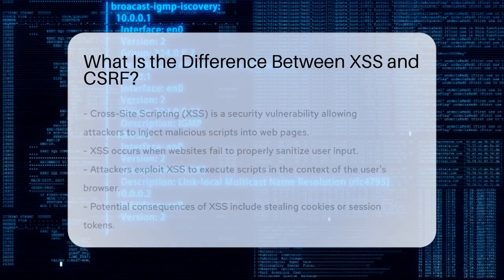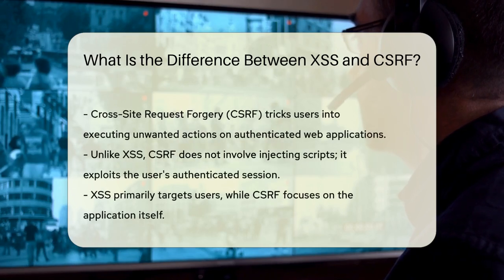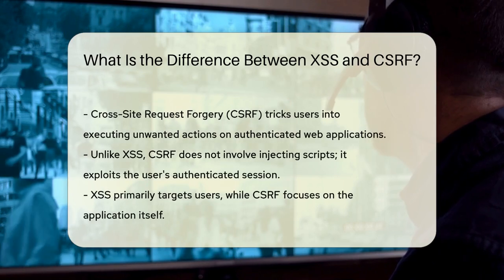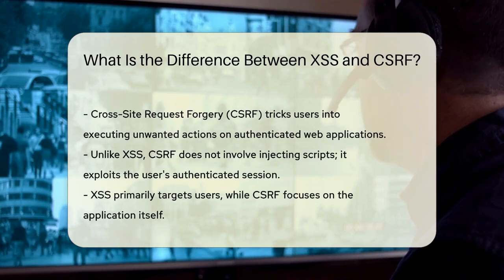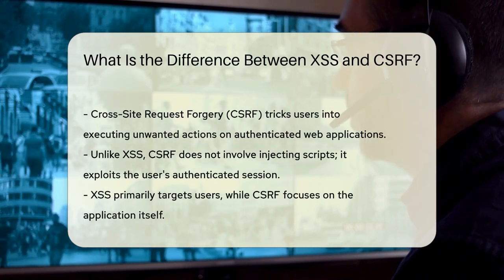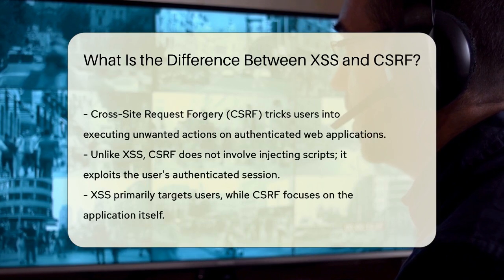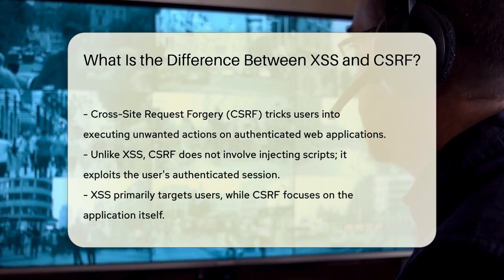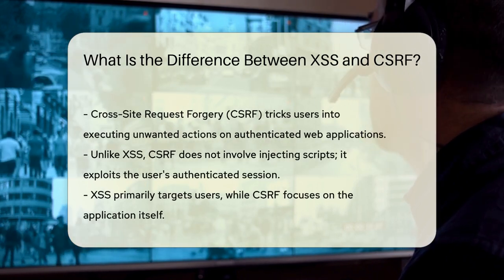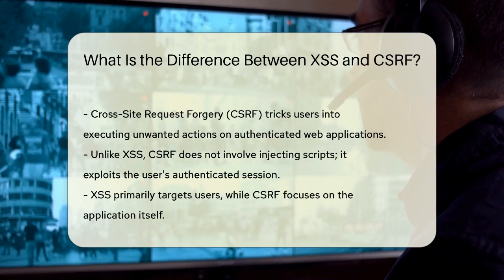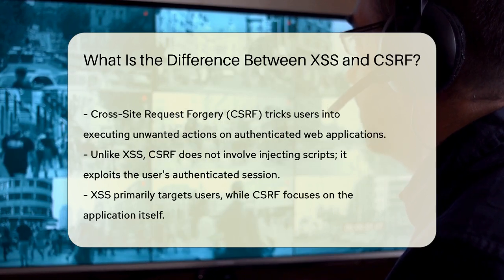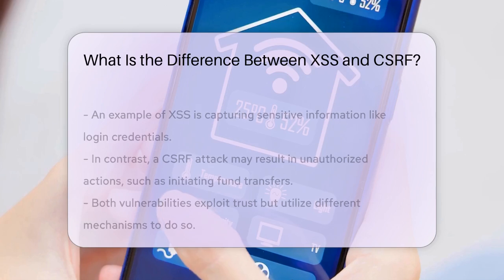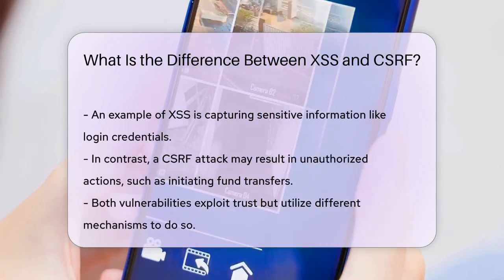On the other hand, cross-site request forgery, or CSRF, tricks a user into executing unwanted actions on a web application in which they are authenticated. Unlike XSS, CSRF does not involve injecting scripts into a page. Instead, it uses the user's authenticated session to perform actions without their consent. XSS primarily targets users, while CSRF targets the application itself by leveraging the user's session.